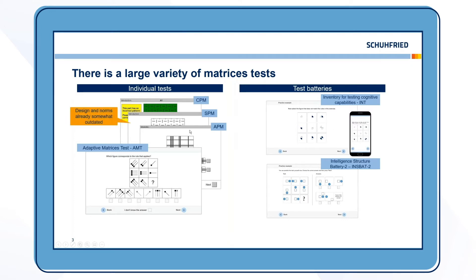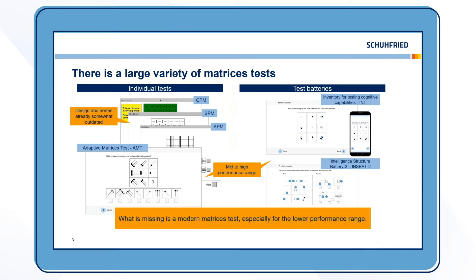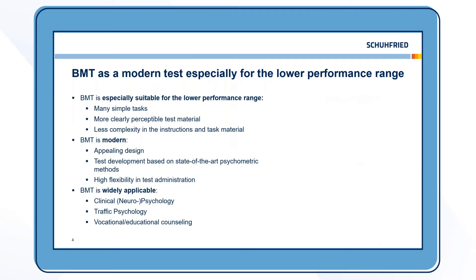The Ravens tests are now somewhat outdated when it comes to design and norms, while other VTS tests and subtests of intelligence test batteries were primarily designed for measuring in a range of medium to high performance. So from our point of view, what was missing was a modern matrices test which was especially developed for the lower performance range — and this is exactly what we have done with BMT.